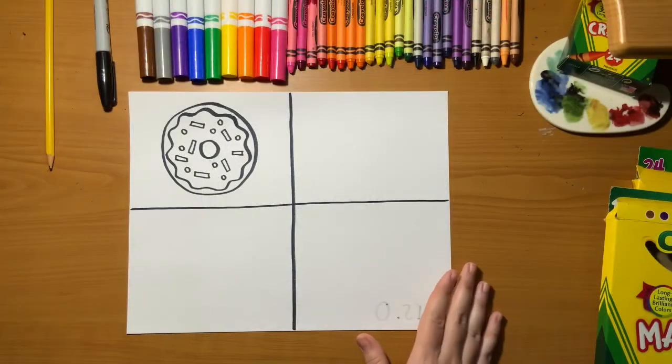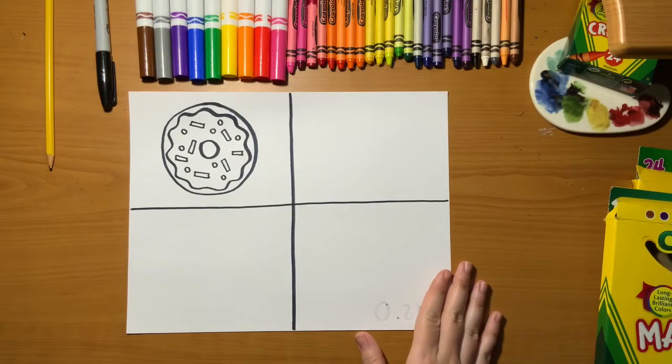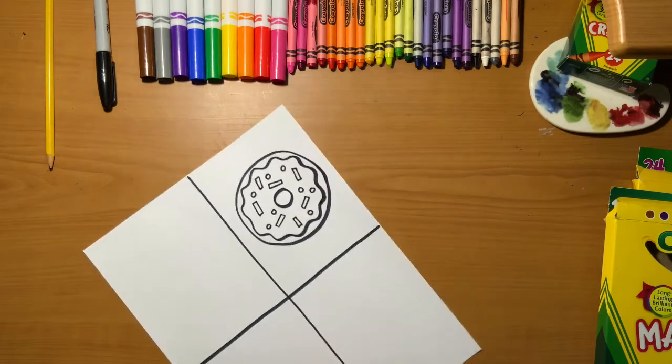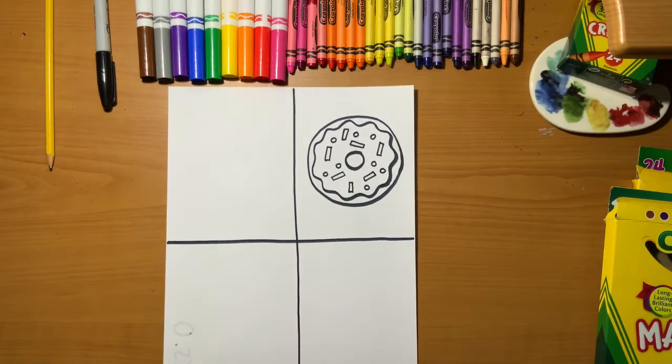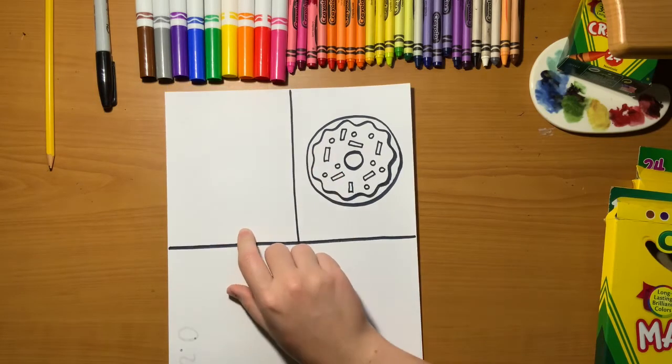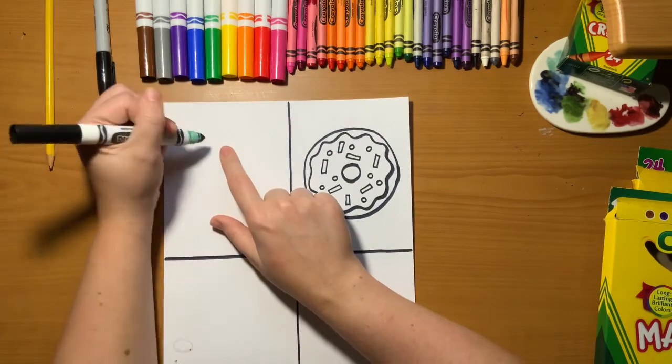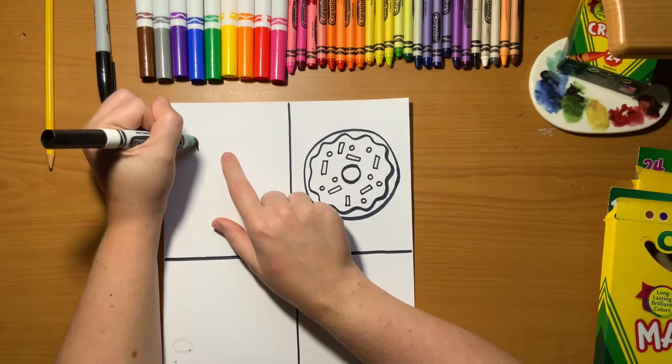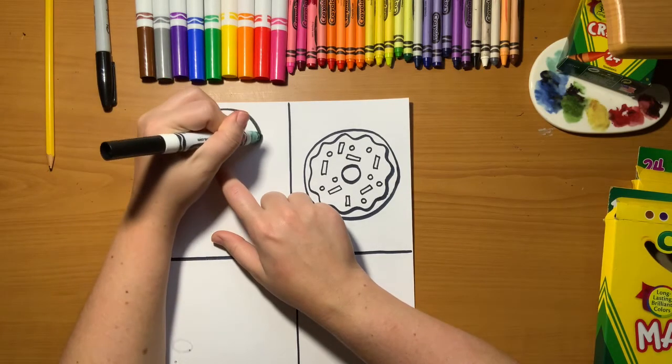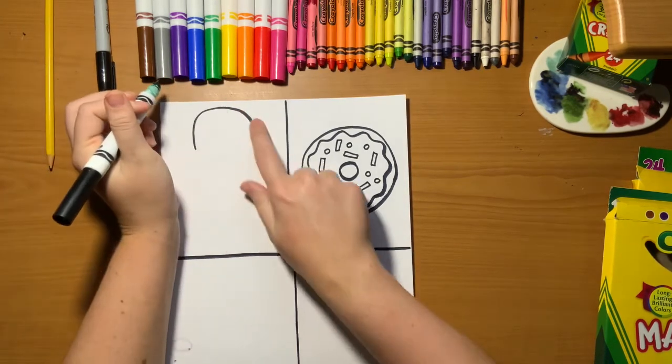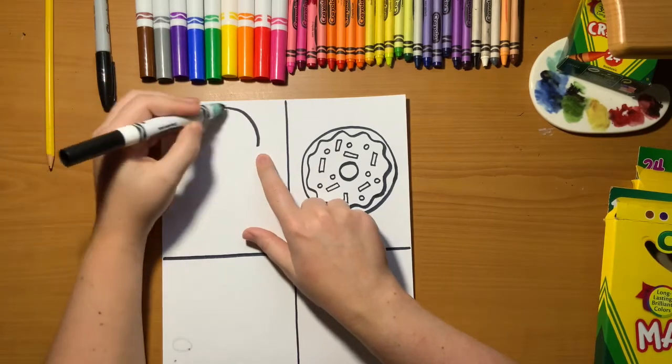All right, for our next drawing, we're actually going to be turning our paper. Turn your paper so that it's vertical, up and down. This will give us more room to fit our ice cream cone and our lollipop. Let's start with the ice cream cone.